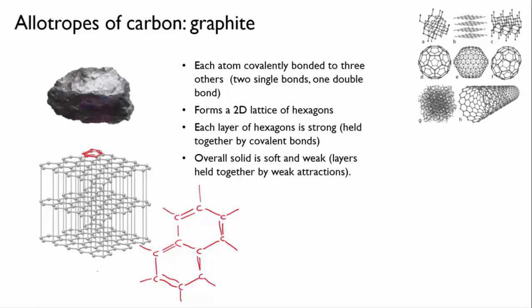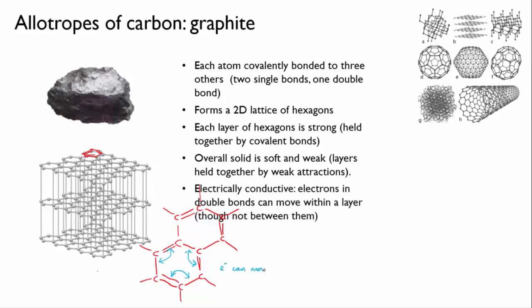In addition, there's something else about this bonding arrangement that gives graphite special properties. The pattern of single and double bonds in graphite is not fixed but can alternate, so that single becomes double and double becomes single.